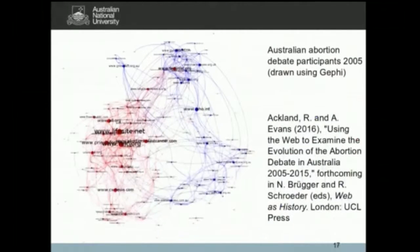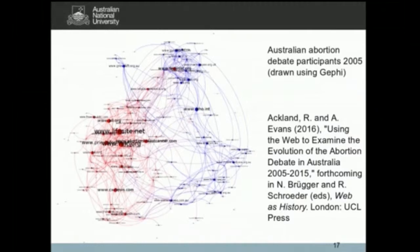This is the same network visualised using Gephi software, from a book chapter comparing the abortion debate network in 2005 with how it looked in 2015. It's the same network but visualised differently. You can see the very strong clustering.